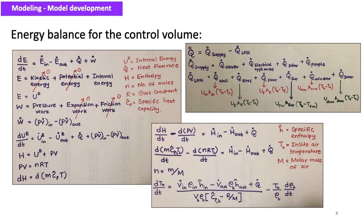W is the combination of pressure work, expansion work, and friction work. Since the volume of the room is fixed, expansion work is zero. Friction work is also close to zero because air is the fluid of interest. Pressure work is the only relevant term in energy transfer by work in this model. Considering the relations h = u + pv, pv = nRT, and dH = dmc_P T, we can derive the energy balance equation into its final form.